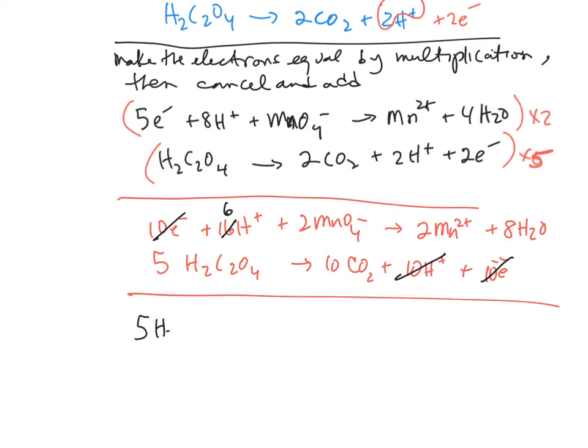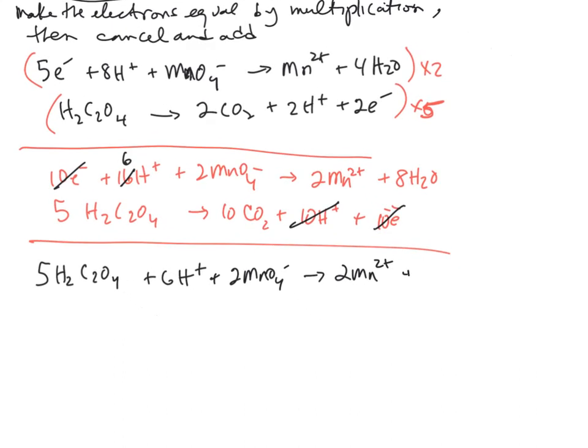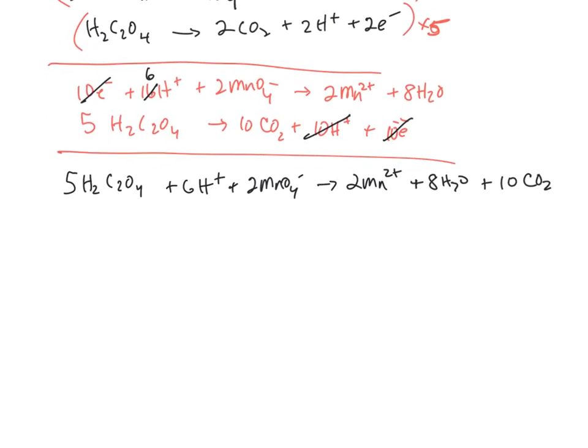So you got 5H2C2O4 plus 6H plus, plus 2 MnO4 minus, forms 2 Mn2 plus, plus 8 H2O plus 10 CO2s. I think that looks pretty good. That's the answer, and notice that it is an acid solution.